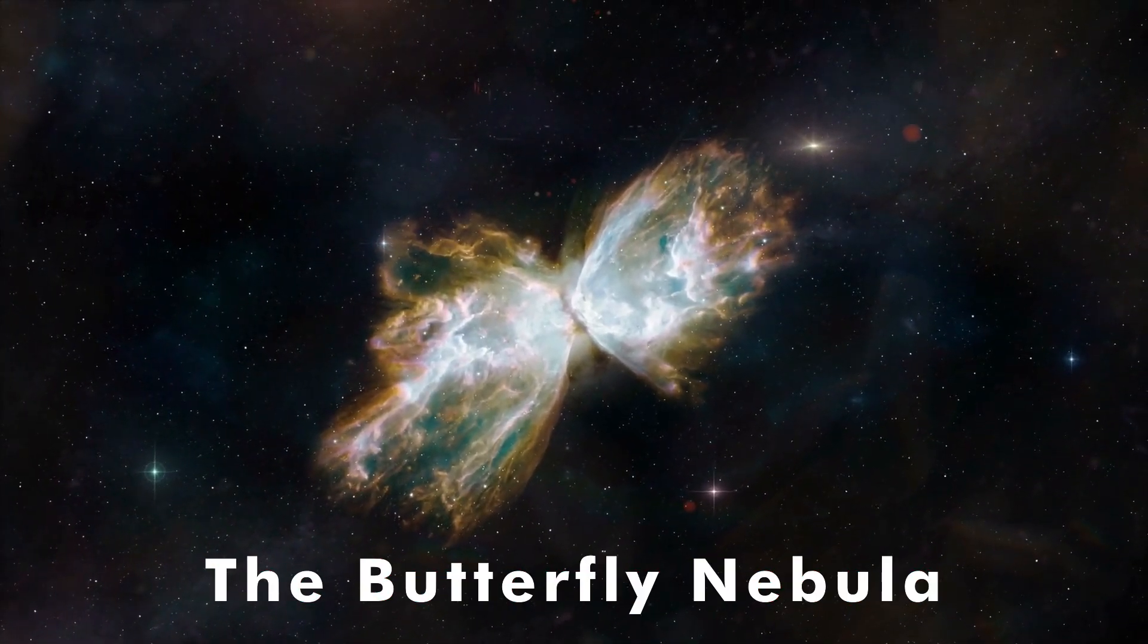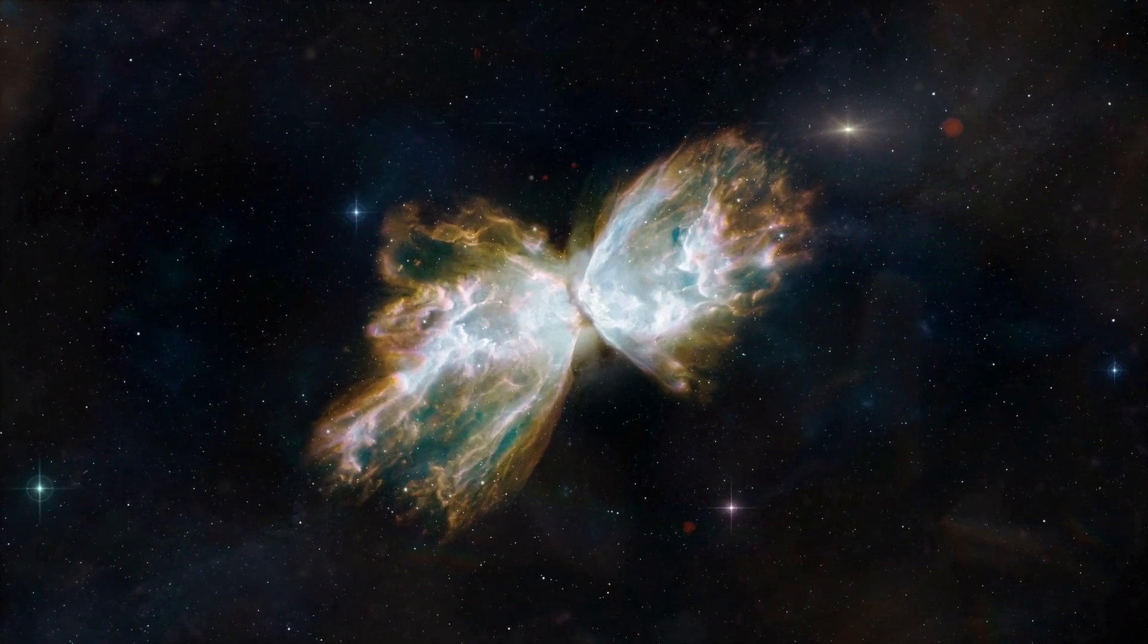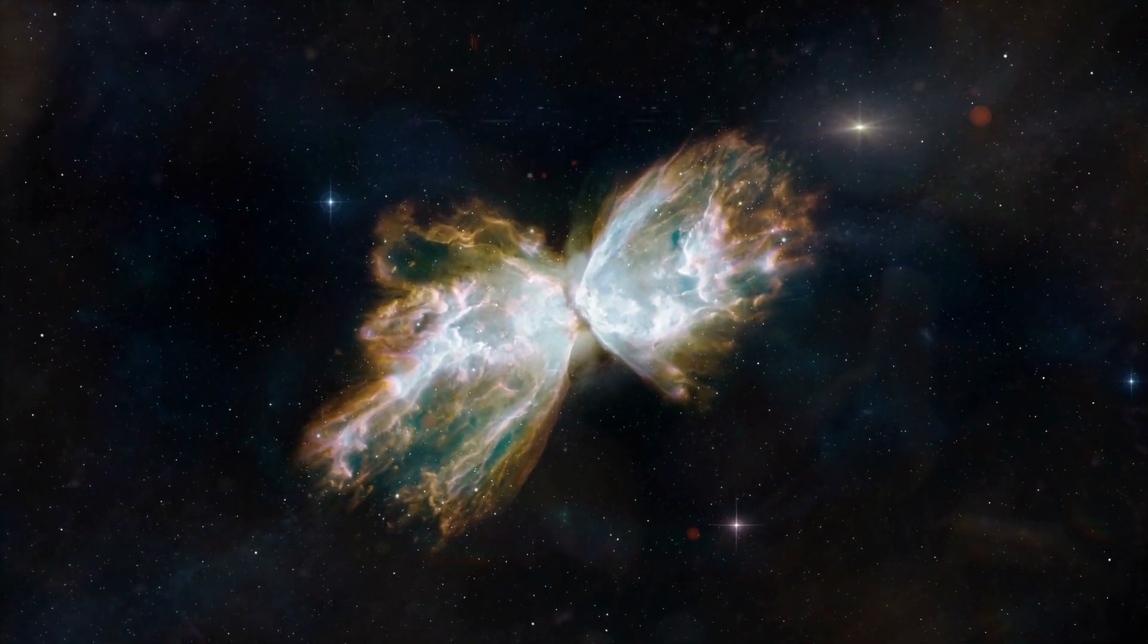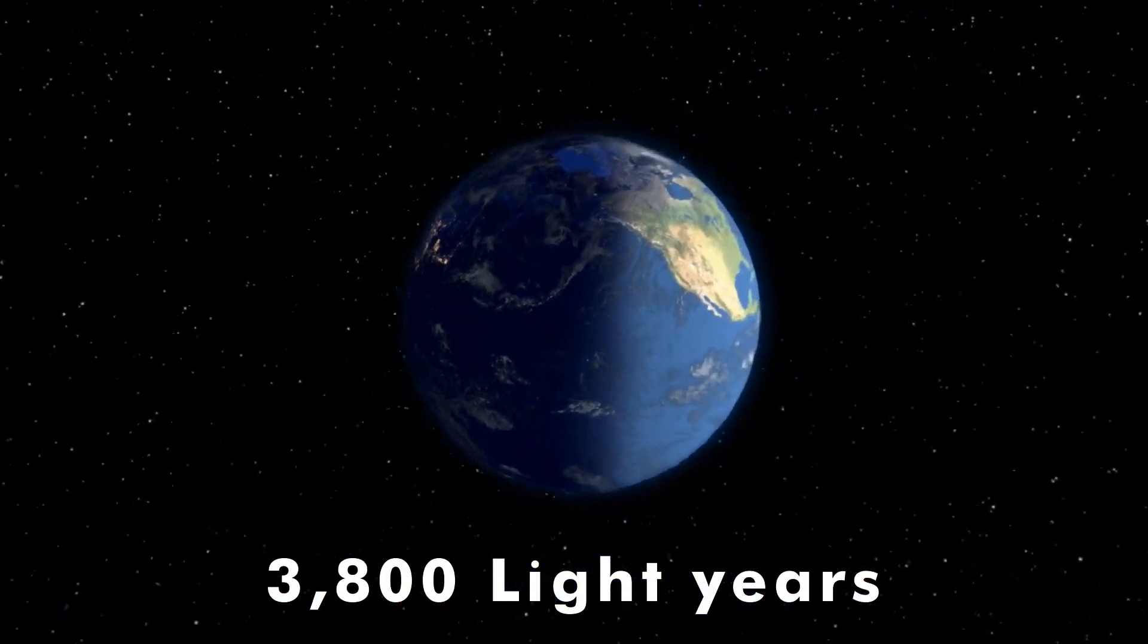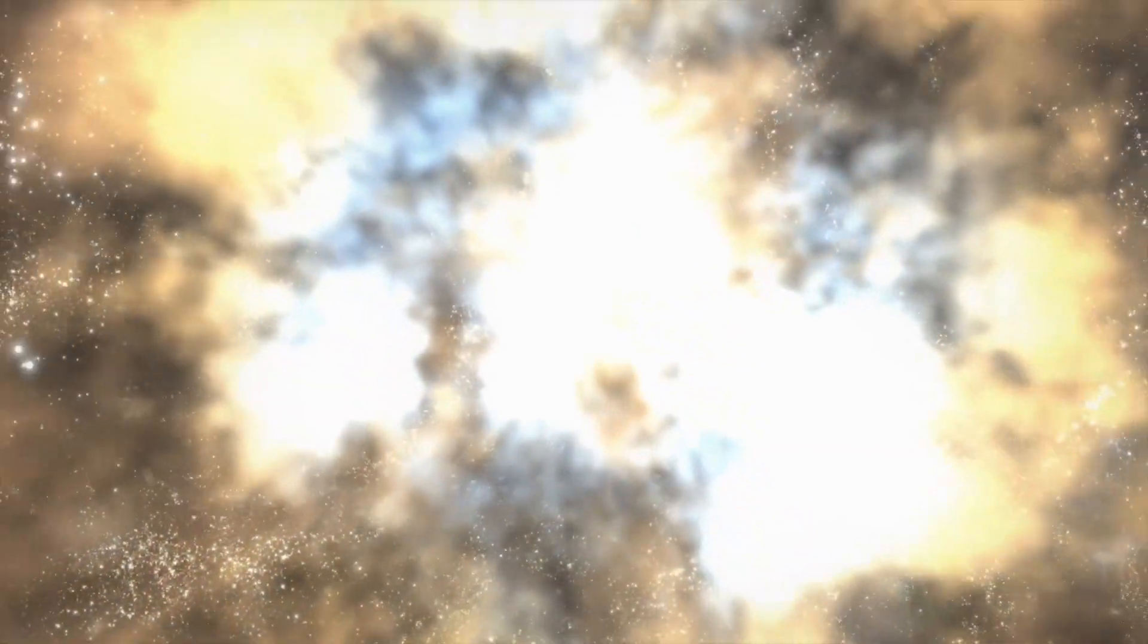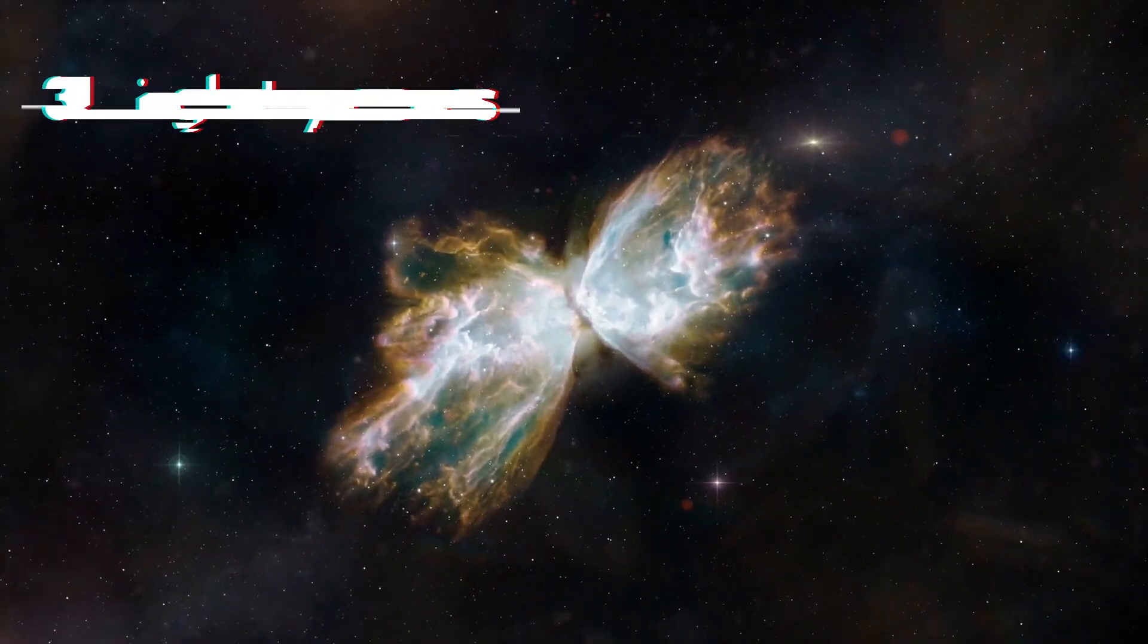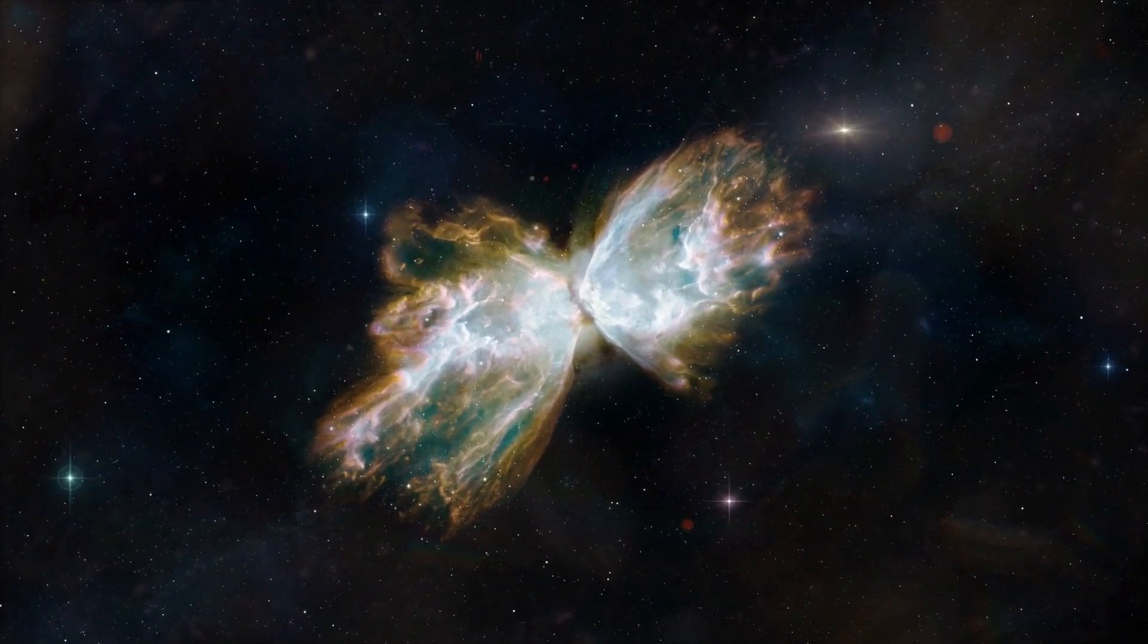The Butterfly Nebula is a bipolar planetary nebula located in Scorpius. It lies at a distance of 3,800 light-years from Earth. Named for its resemblance to a butterfly, the nebula has a wingspan that stretches across three light-years. It is sometimes also called the Bug Nebula.